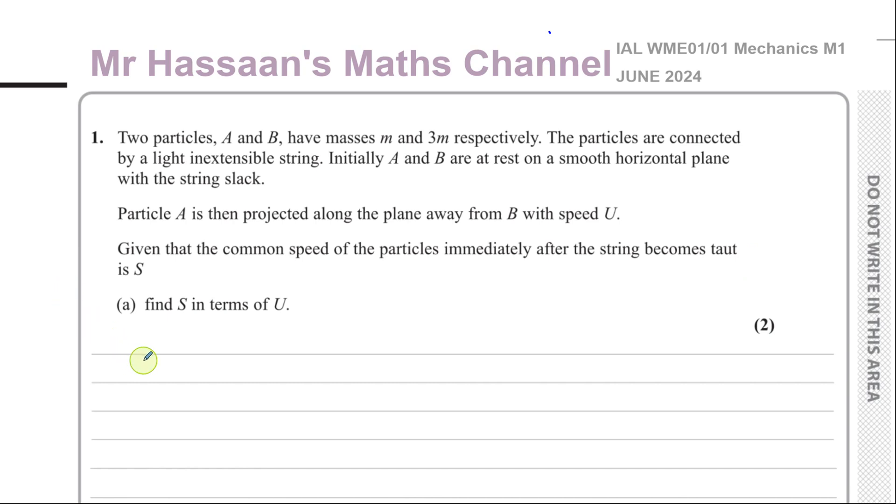So initially, you can say before the string becomes taut, you have A and you have particle B on a horizontal plane. That's A and B on a horizontal plane and A has a mass of M and B has a mass of 3M and they're connected together with a string which is slack. A is projected away from B. So in this case, A is projected with a speed U, this direction. B is at rest, so this is 0 meters per second.